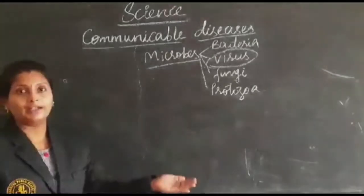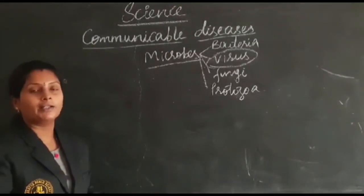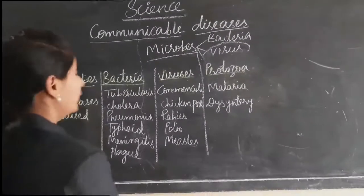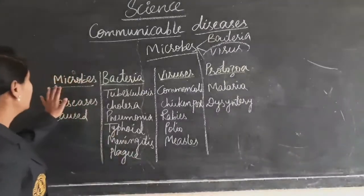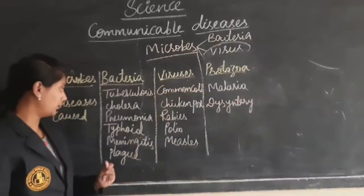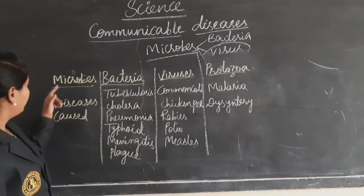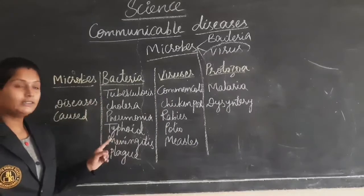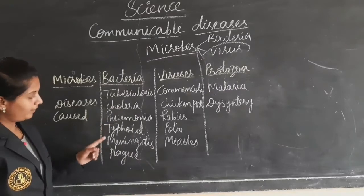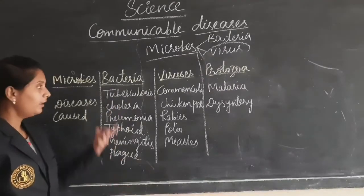But how are they spreading diseases? In what mode are they spreading diseases to us? That we are going to discuss now. Here are the microbes like bacteria, viruses and protozoa. What kind of diseases are they spreading? If you take bacteria, the diseases like tuberculosis, cholera, pneumonia, typhoid, meningitis, and plague — these are the diseases spread by bacteria.